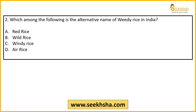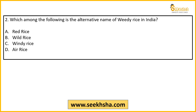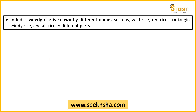Question number 2: Which among the following is the alternative name of VD rice in India? Options are: A) red rice, B) wild rice, C) windy rice, D) air rice, E) all of the above. The right answer is all of the above. VD rice is known by all four names — red rice, wild rice, windy rice, and air rice. Additionally, it is also called 'pediangin', so remember that name as well.